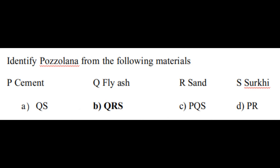Let us see one past gate question. Identify pozzolana from the following materials: P - Cement, Q - Fly ash, R - Sand, S - Surkhi. Option A is QS, Option B is QRS, Option C is PQS, Option D is PR.